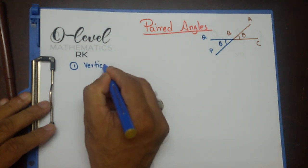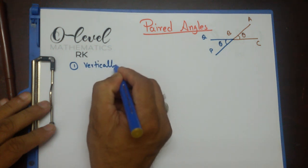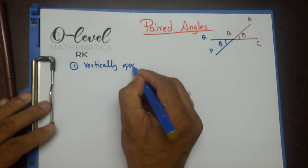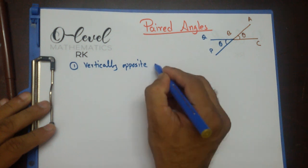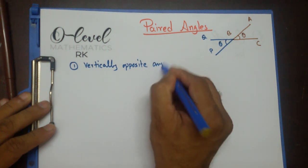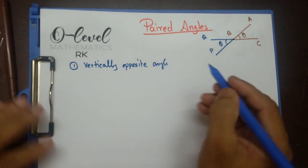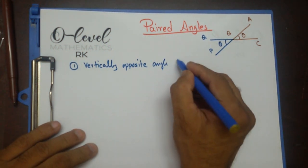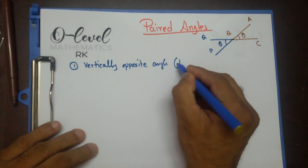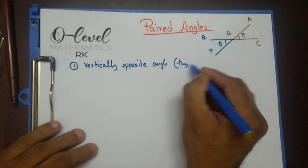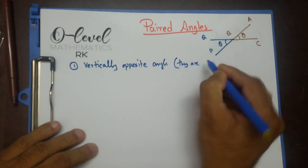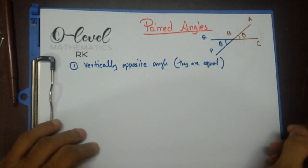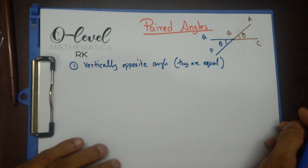These are called vertically opposite angles, and they are equal. This is the vertically opposite angle.